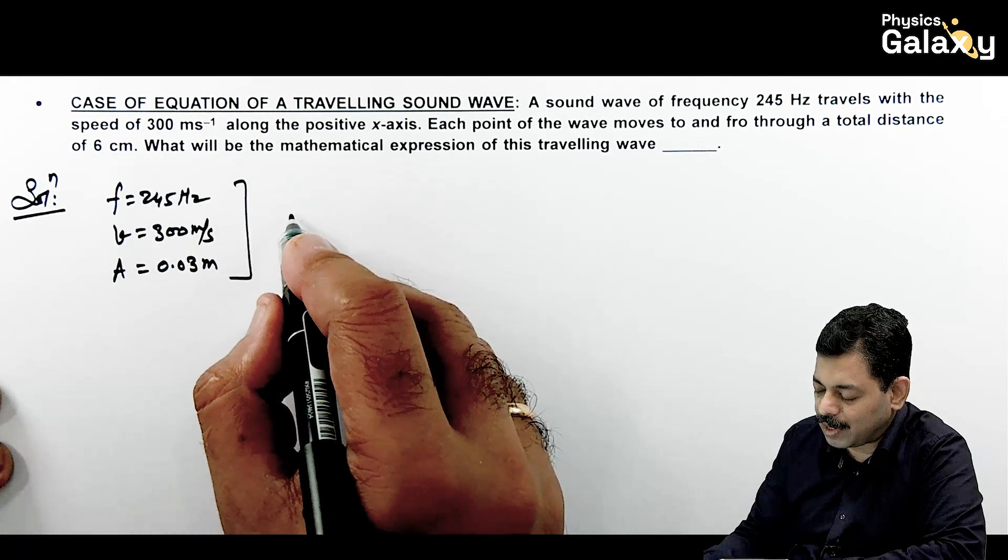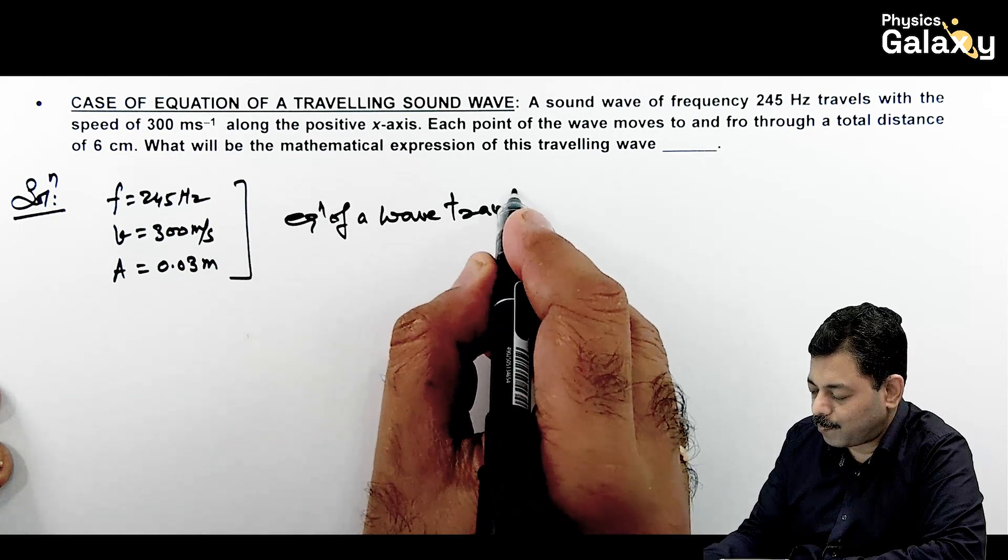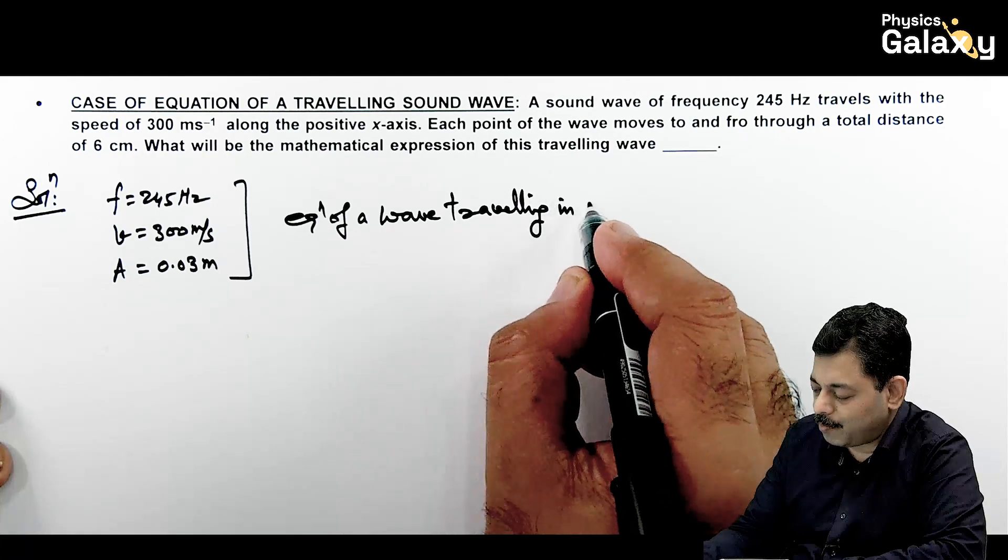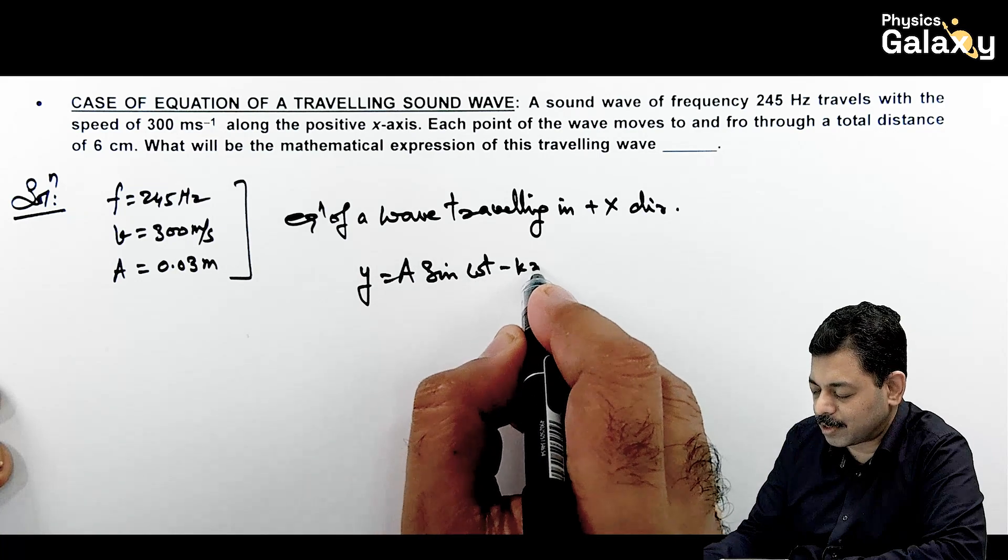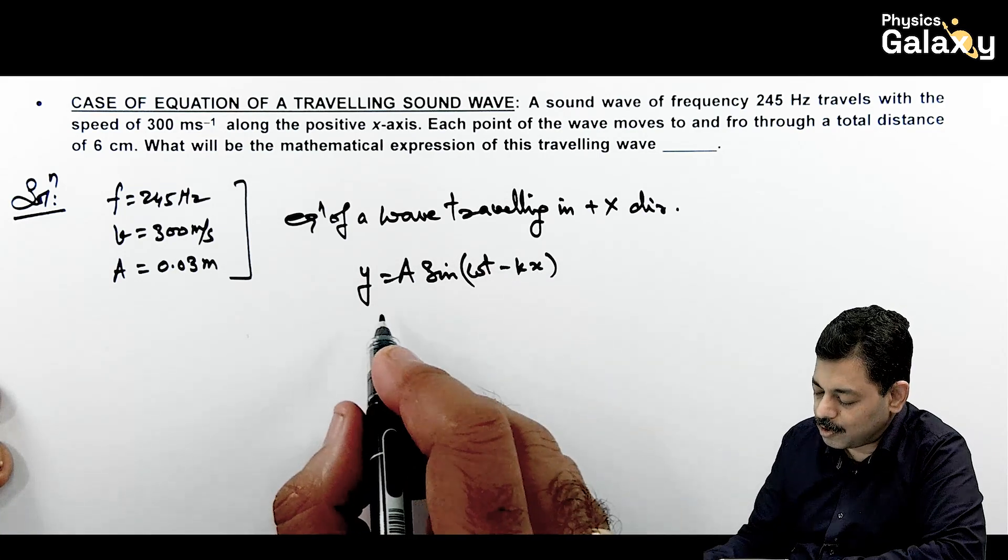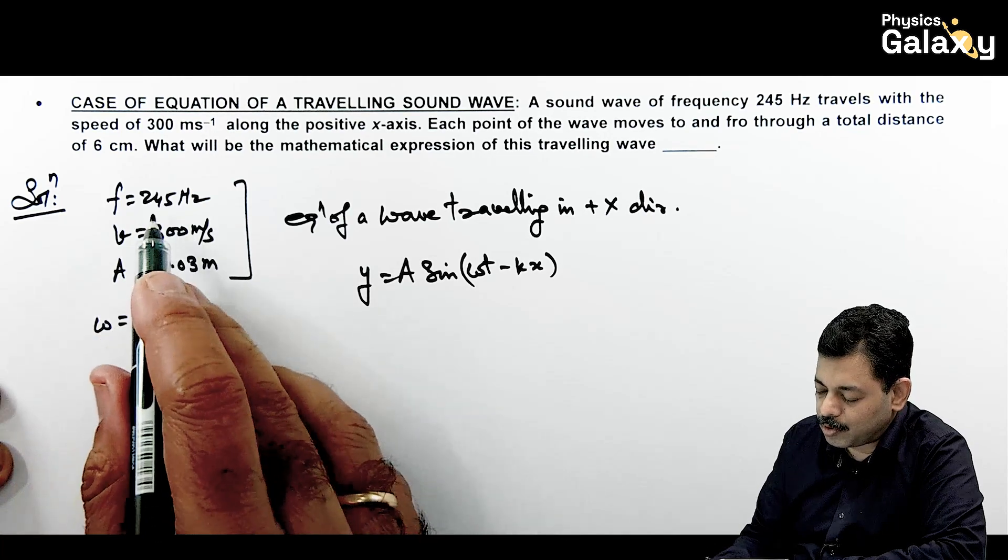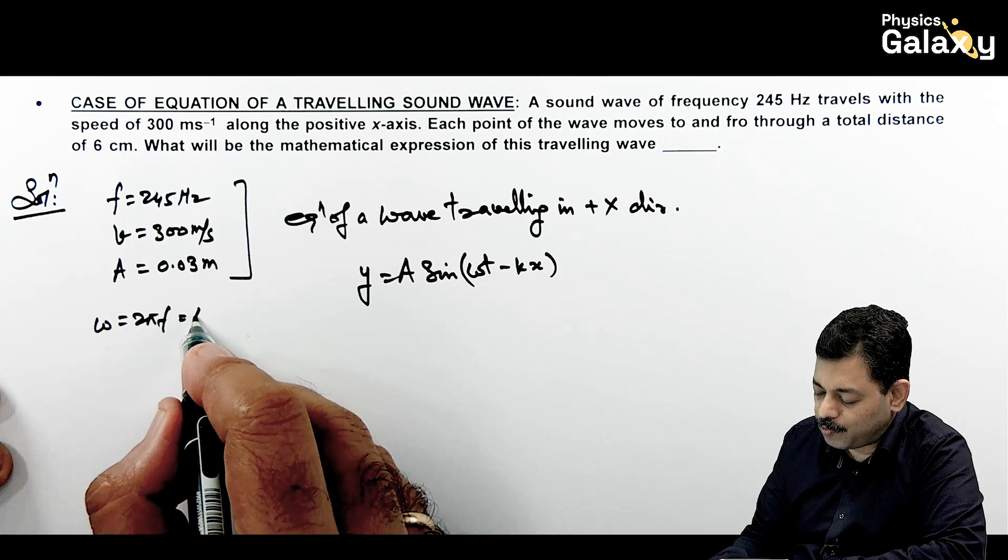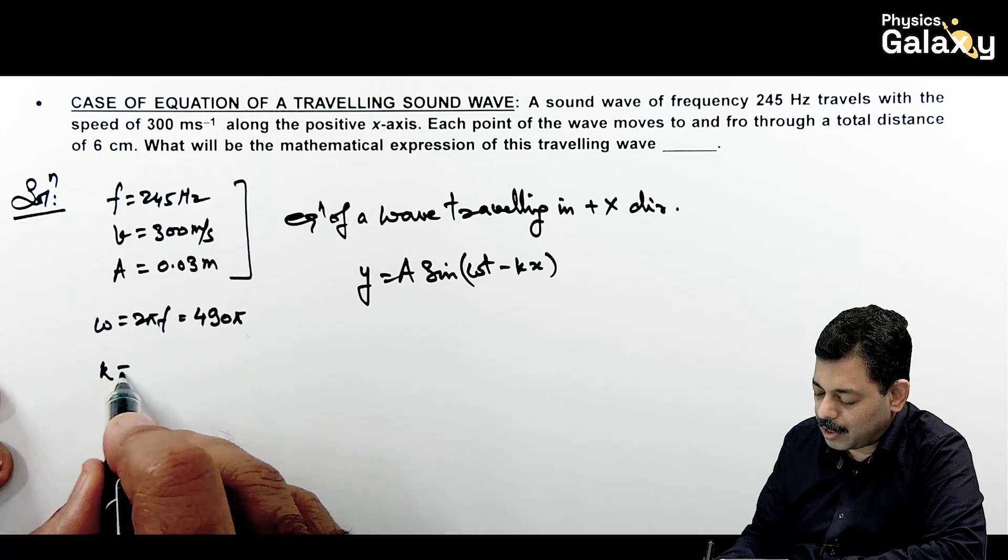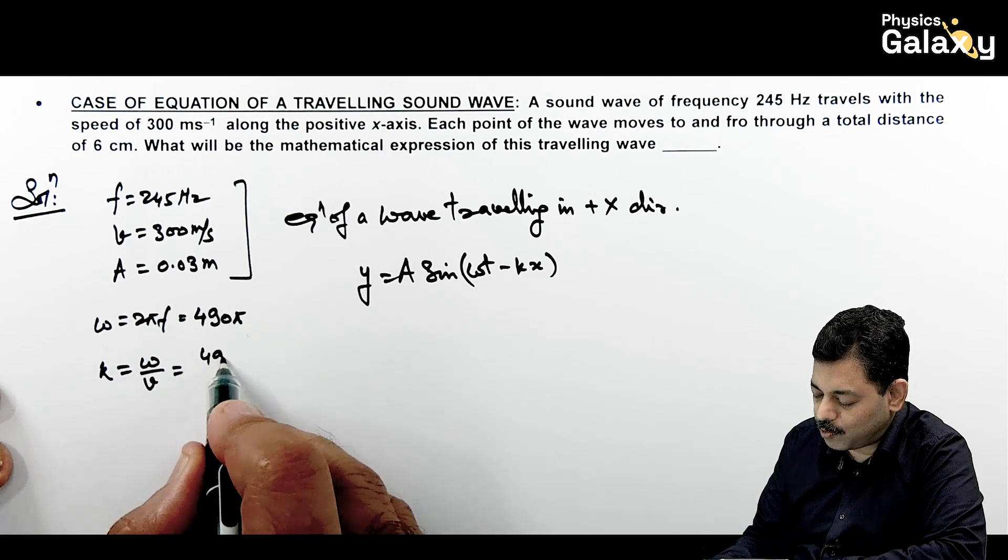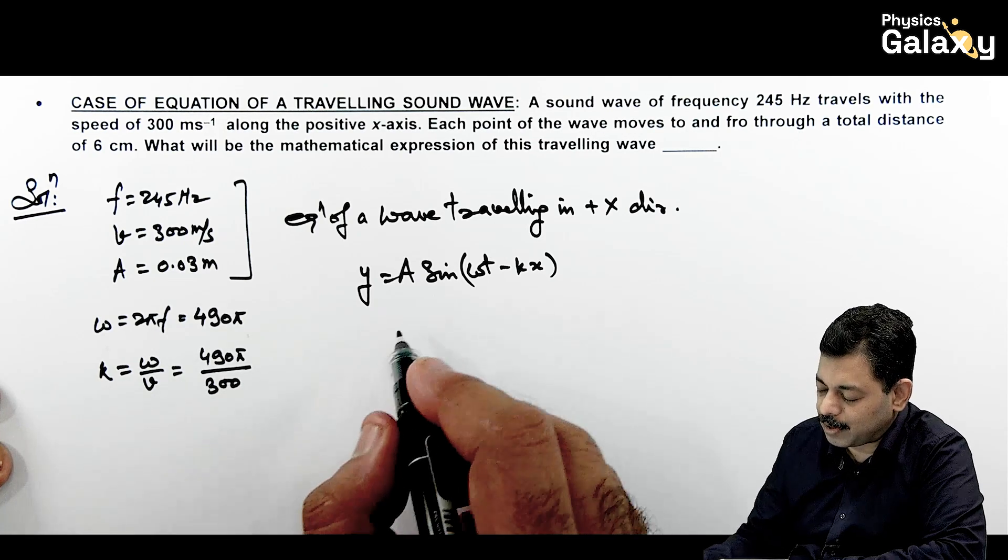Using these values, we can write equation of a wave traveling in plus x direction directly. You can write as A sine of omega t minus kx. This is what you need to use, so just put the data. Omega ka value will be 2 pi f, which will be 245 into 2, comes out to be 490 pi. In this situation, k ka value, if you calculate, this can be written as omega by v, so this 490 pi divided by v is 300, so this is 49 by 30 pi.